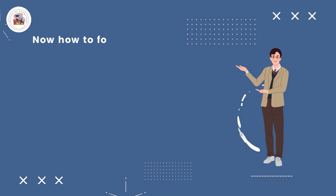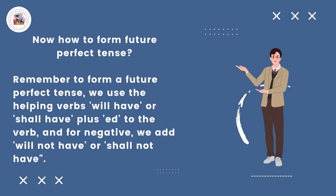Now, how to form the future perfect tense? To form a future perfect tense, we use the helping verbs: 'will have' or 'shall have', plus the past participle form of the verb (ending in -ed). For negative sentences, we add 'will not have' or 'shall not have'.